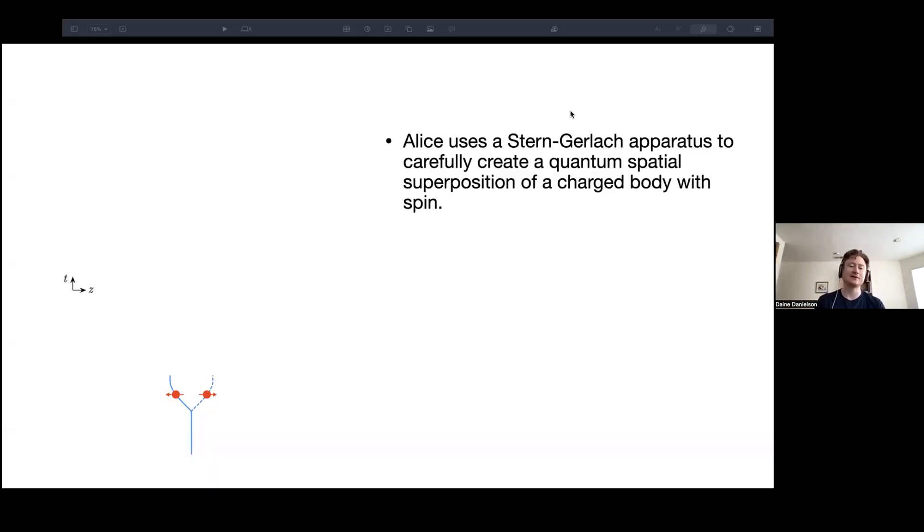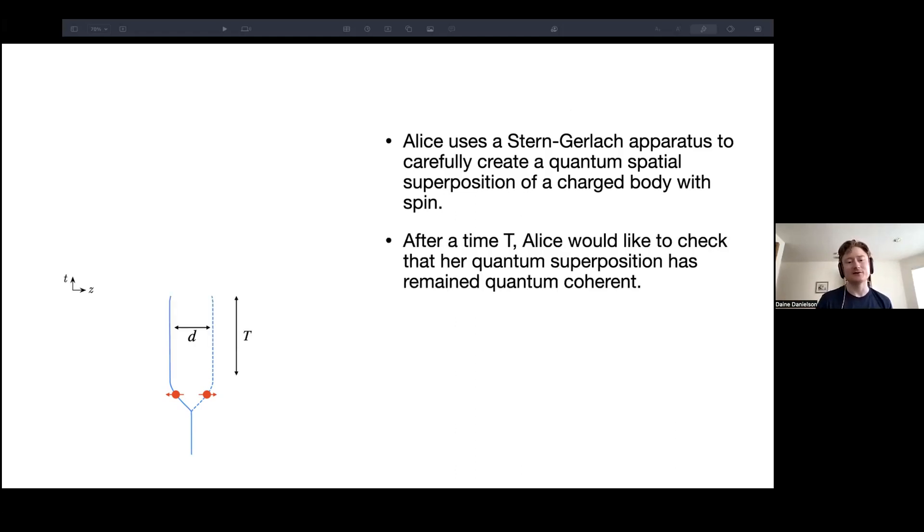So to begin, I'm going to discuss a thought experiment in flat spacetime, which will then lift to a black hole spacetime. In the thought experiment, we consider an experimenter, Alice, that uses a Stern-Gerlach apparatus to carefully create a quantum spatial superposition of a charged body carrying spin. And you can see the charged bodies in red and the two different branches of the wavefunction are the solid blue and dashed blue. This is a spacetime diagram that you're seeing here. So after a period of time t, Alice would like to check that this quantum superposition that she's created has maintained its quantum coherence.